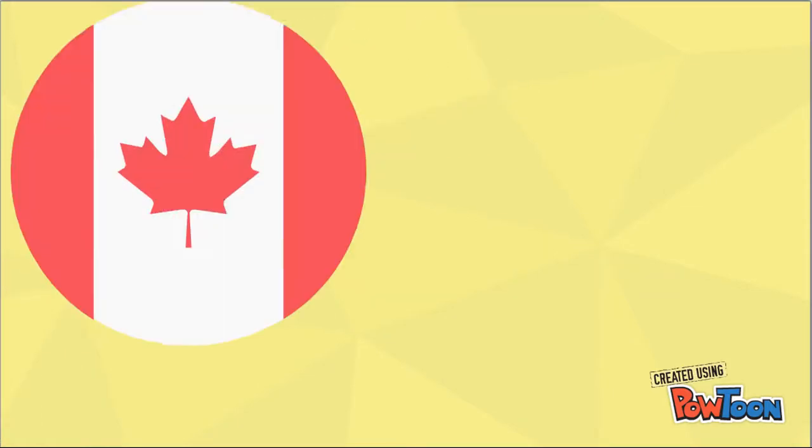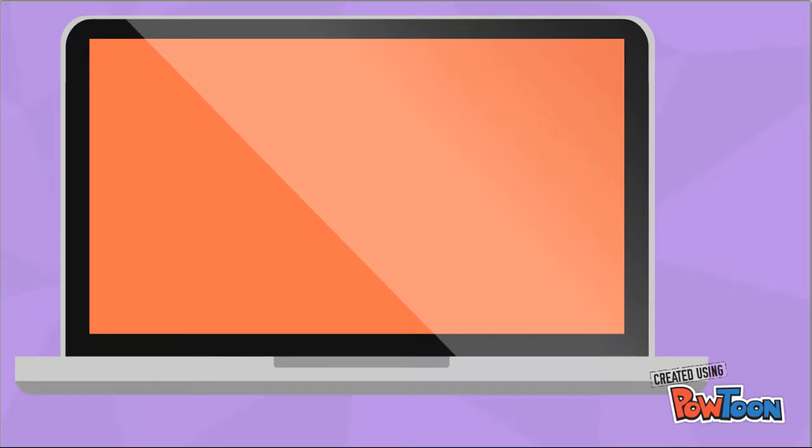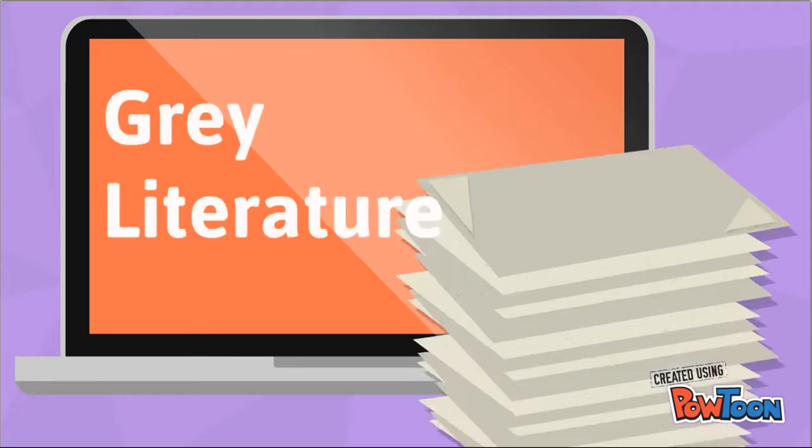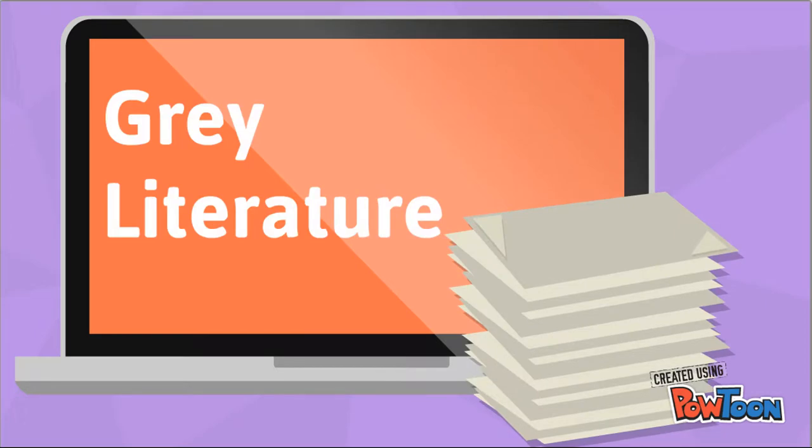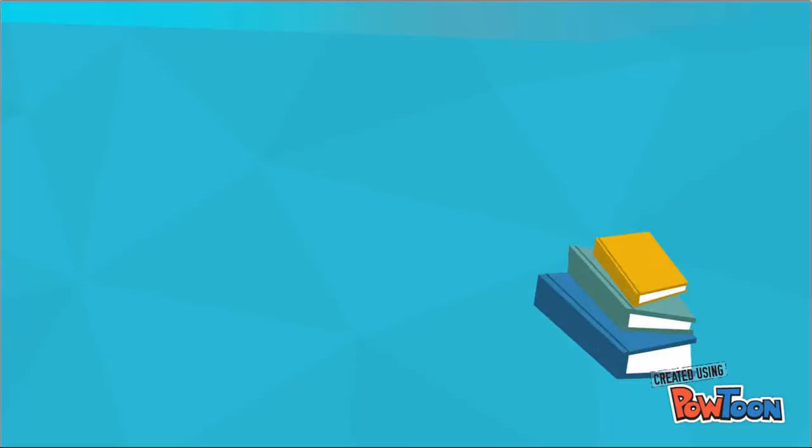For information sources such as government and organizational reports, the information retrieval process can become a little bit trickier. We refer to these kinds of information sources as grey literature because they are not published through the traditional models like books and journals are.